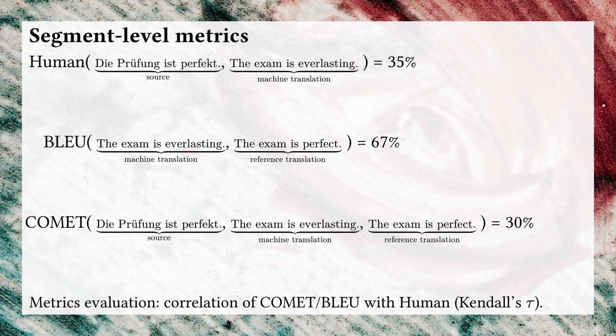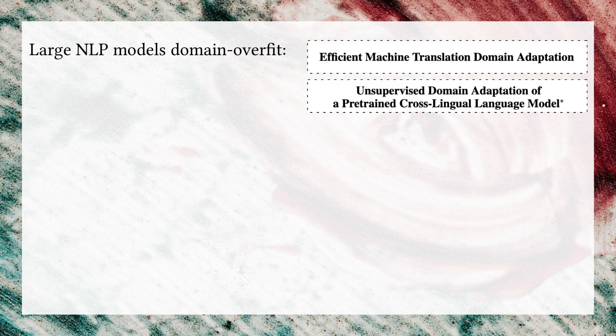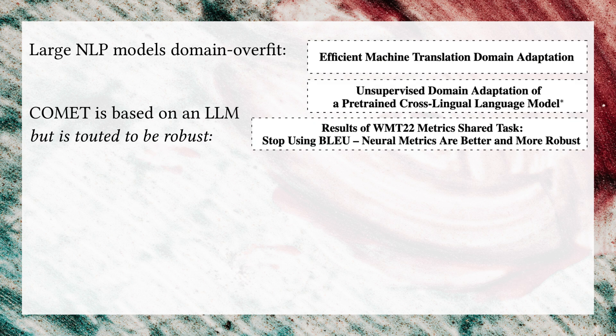The metric quality is usually measured by correlation with human judgment. Previous research has shown that language models are domain biased. However, COMET, one of the most popular MT metrics, is touted to be robust.